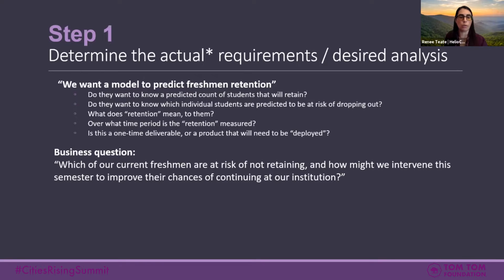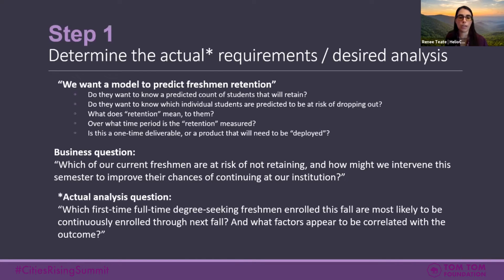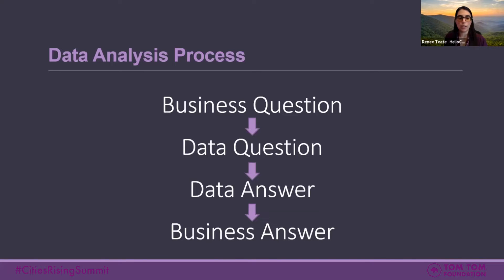So they're really asking: which of our currently enrolled freshmen are at risk of not retaining? How might we intervene this semester to improve their chances of continuing? When you further refine the definitions and get into the analytical version of the question, it really might be: which first-time, full-time, degree-seeking freshmen enrolled this fall are most likely to be continuously enrolled through next fall? And what factors appear to be correlated with that outcome so we could plan some interventions? You have to listen to a business question, convert it into a data question, do the analysis to get your data answer, and then convert it back into a business answer.